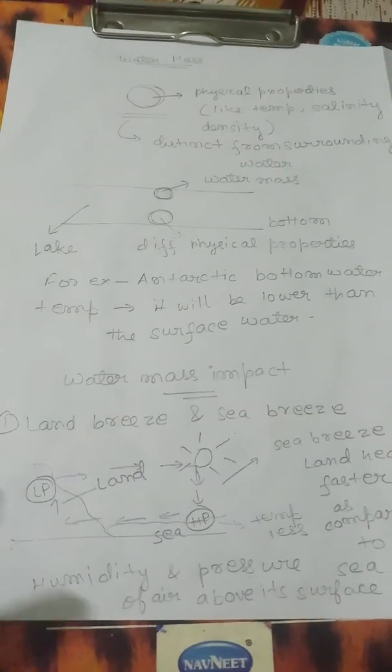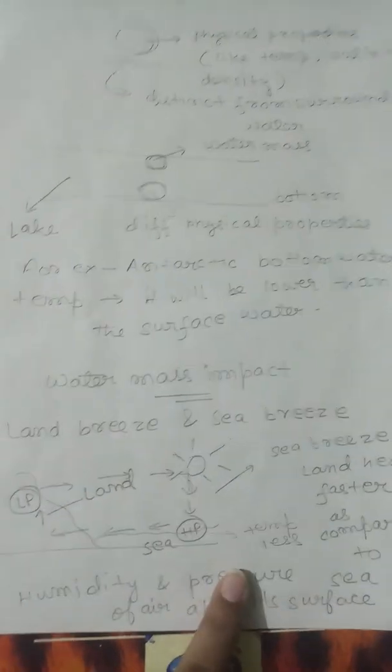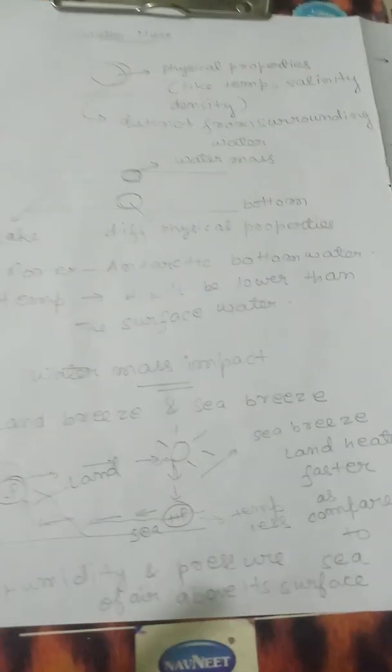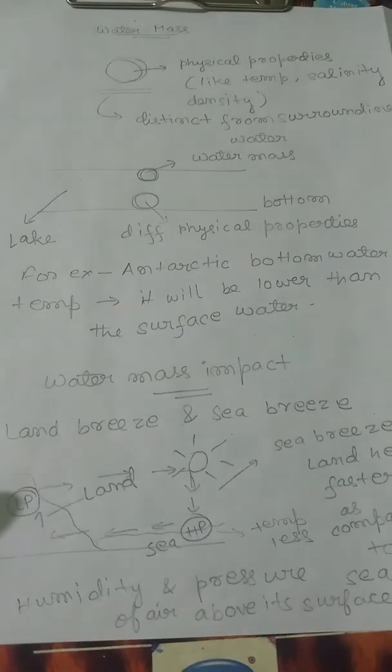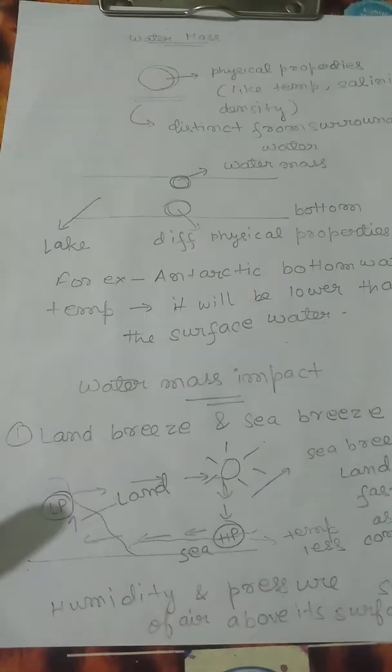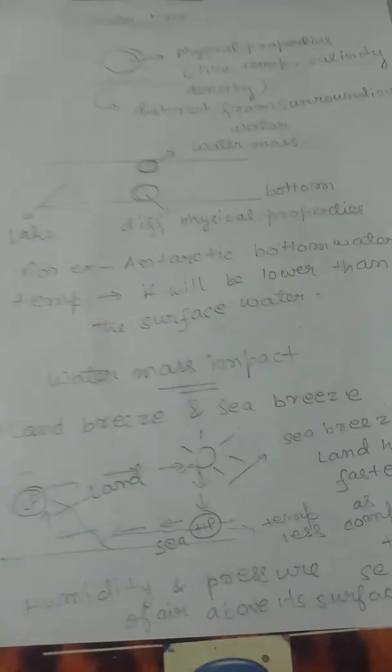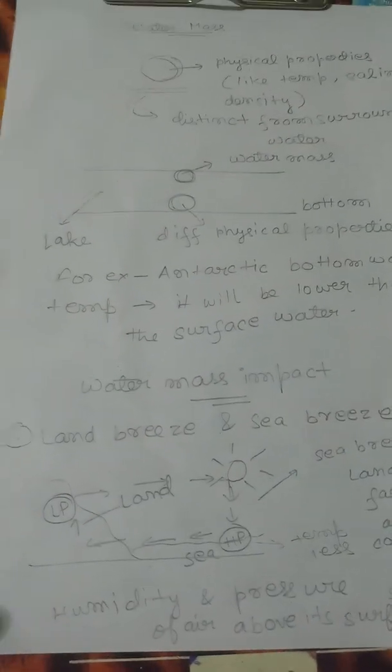At night, the reverse will occur. At night, the land will have high pressure zone and sea will have low pressure zone. As we know, land heats up faster and cools down slowly as compared to sea.